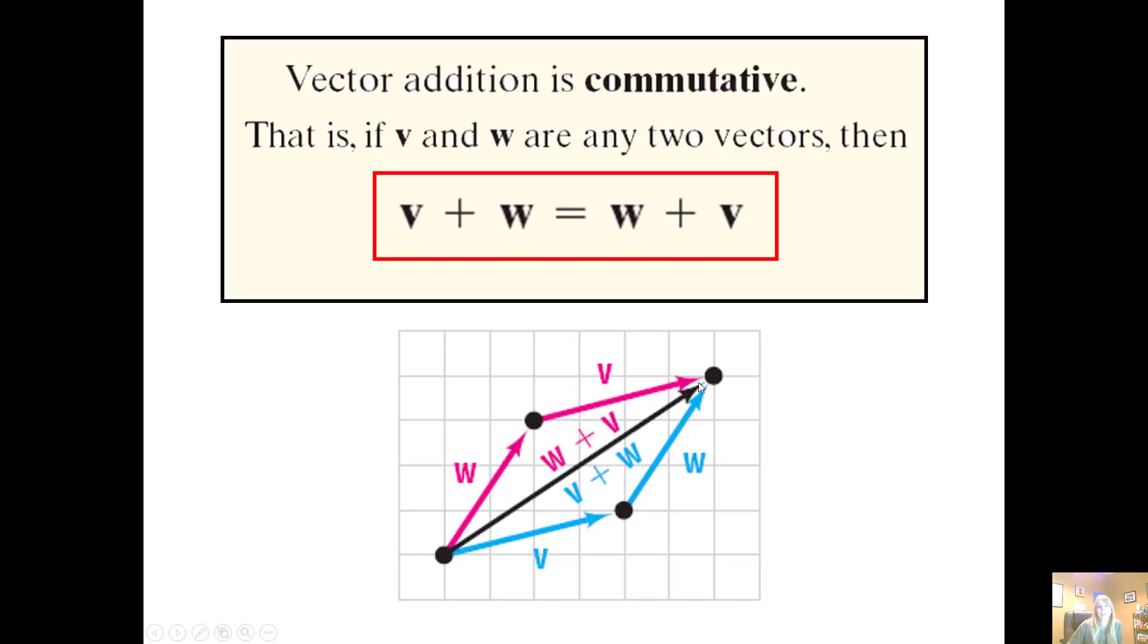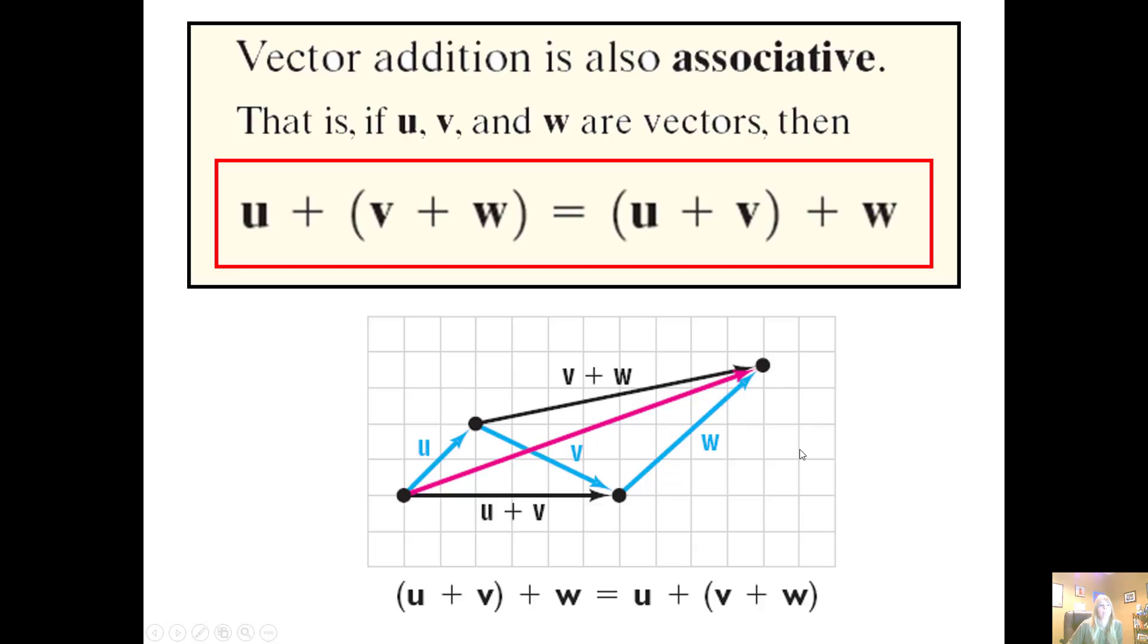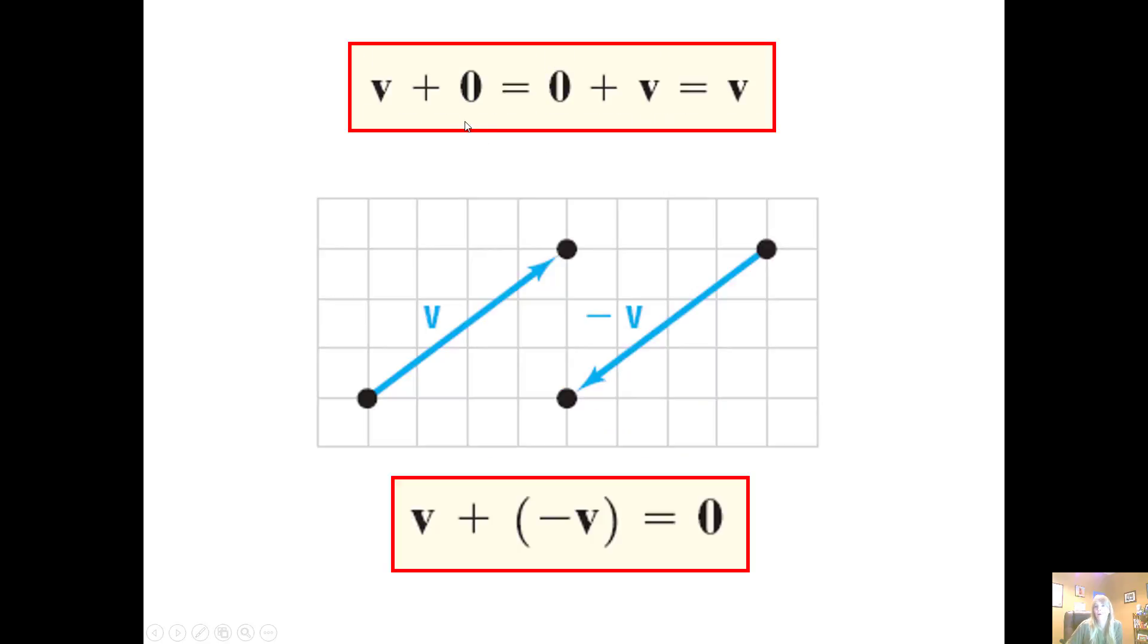Vectors are also associative. If I group and add v plus w first, then add u to it, I get the same value as if I do u plus v first and then add w to it. I get to the same place.